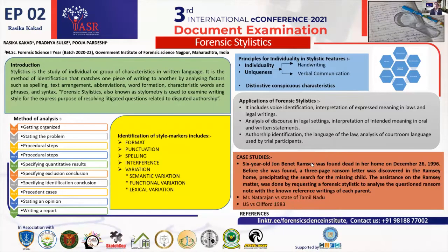Upon analysis and observation, we can obtain different types of evidence. As mentioned in my poster, the types of evidence that can be received include corroborative, demonstrative, substantial, rebuttal, and corroborative or cumulative.